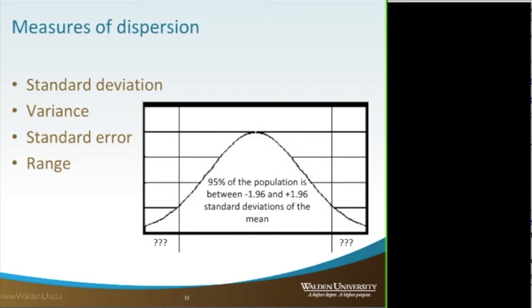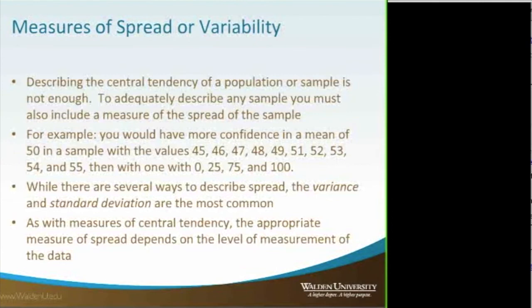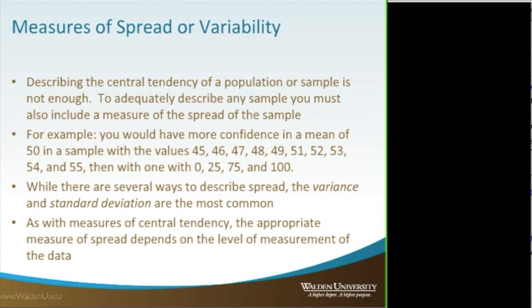Those are measures of central tendency. What makes statistics interesting is to look not only at the central tendency, but also to add measures of dispersion. Examples would be the standard deviation, the variance, the standard error, and the range. You could have two different sets of numbers with the same average or mean but very different standard deviations or variability among those data — and that's important to know.